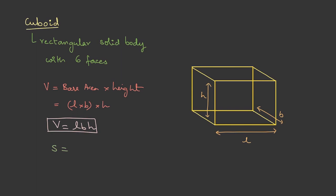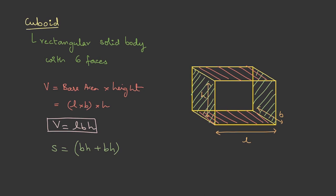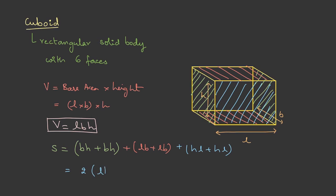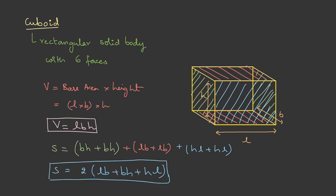For the surface area of a cuboid, we add all the face areas. The two B×H faces give 2BH. The two L×B faces give 2LB. The front and back faces are H×L each, giving 2HL. So the total surface area of a cuboid is 2(LB + BH + HL).